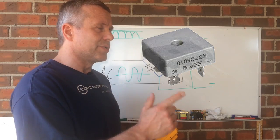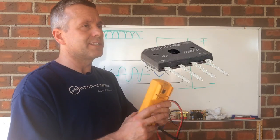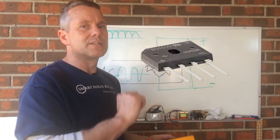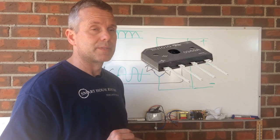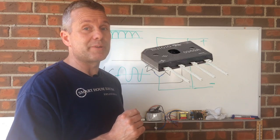When you look at the rectifier, it will typically have a plus and a minus printed into the rectifier. Those two indicate where the DC power is coming out.